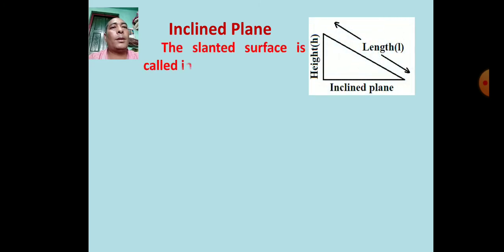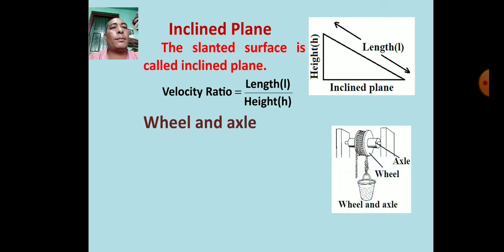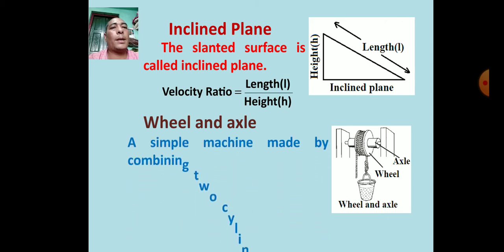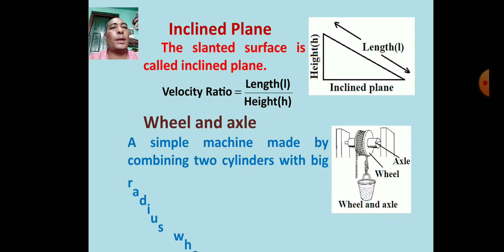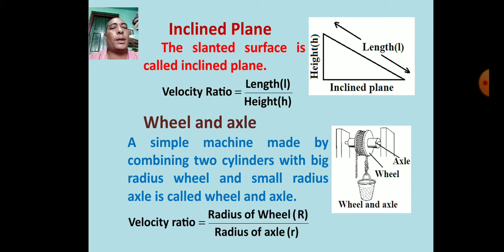The slanted surface is called inclined plane. For an inclined plane, velocity ratio equals length upon height (L/H). Wheel and axle is a simple machine made by combining two cylinders with big radius (wheel, R) and small radius (axle, r). Velocity ratio equals radius of wheel R upon radius of axle r.